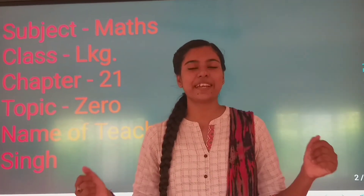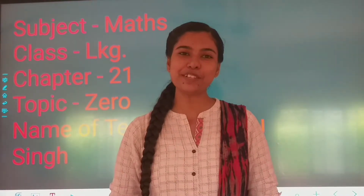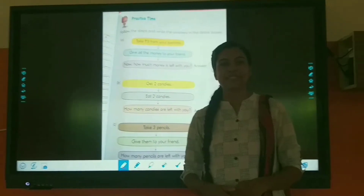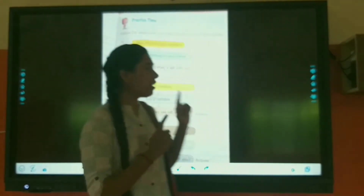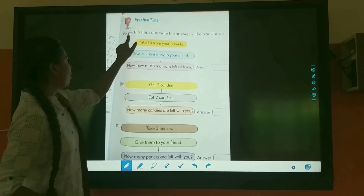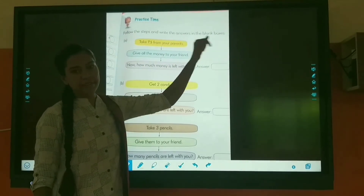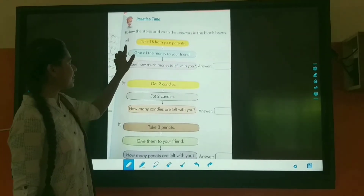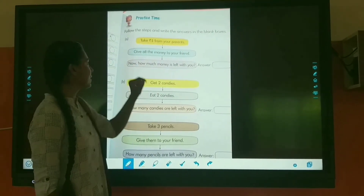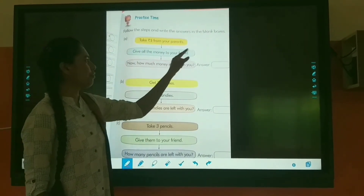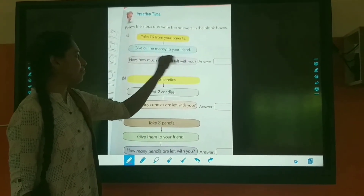So children, I hope you understood the concept of zero. Now it's fun work. Have a look. Follow the steps and write the answer in the blank boxes. First example: take your piece of paper from your parents, give all the money to your friend. Now how much money is left with you?